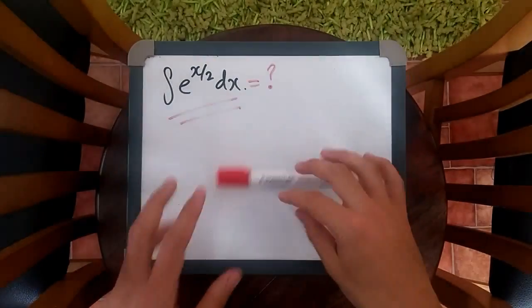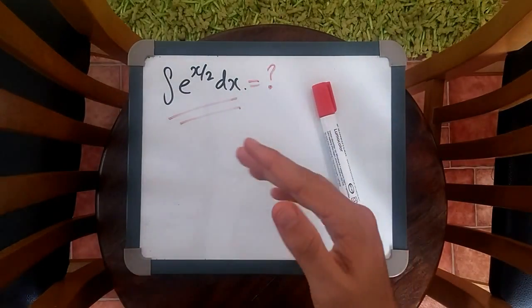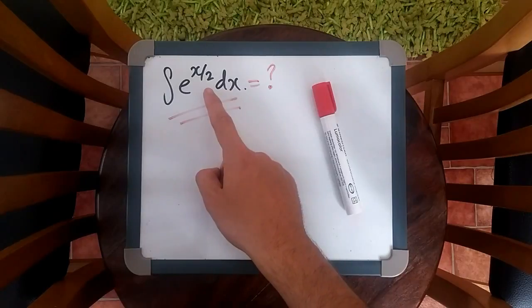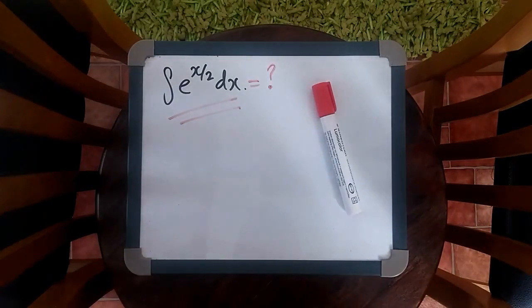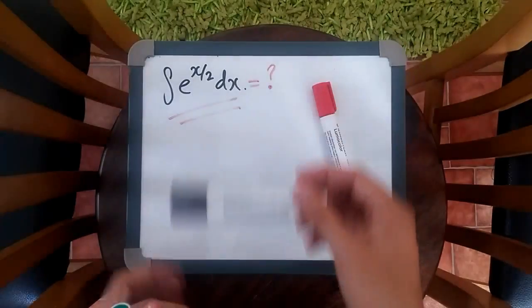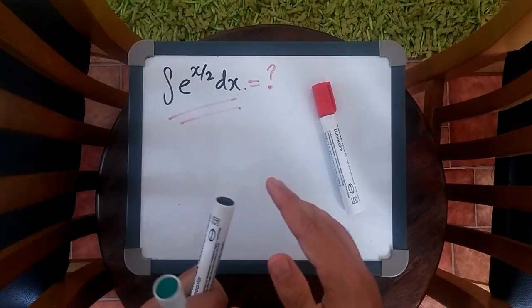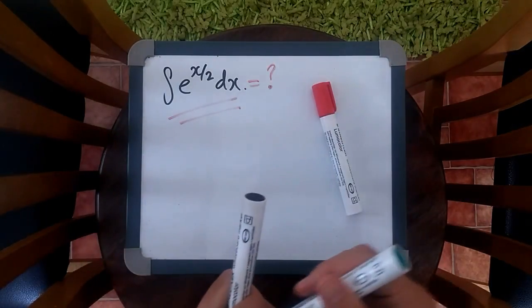Welcome back to another integration video. In this one, we'll be looking to integrate e to the power of x over 2 with respect to x. This is a quite popular question and a lot of people seem to have some trouble with it, so I want to hopefully break it down.